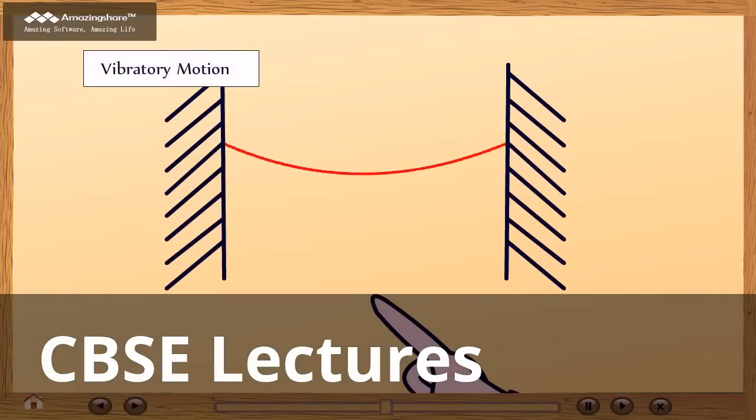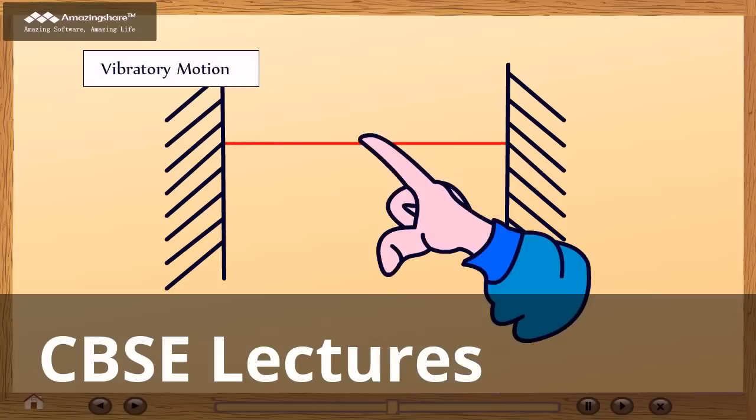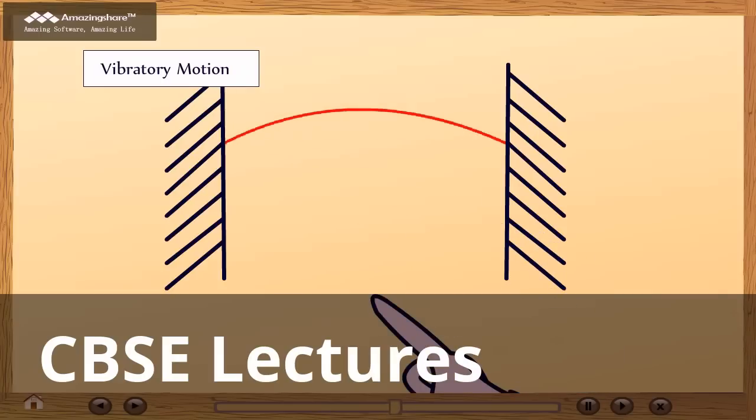No. 5: Vibratory motion - up and down movement of an object. For example, motion in stressed rubber.